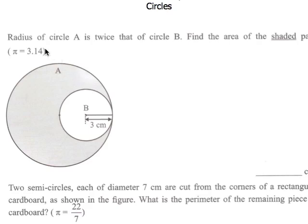Of course we can. And it says that radius of circle A is 2 times or twice that of circle B. So we immediately know that the radius of circle A is 3 times 2, which is 6 cm. And if we know the radius of the big circle, can we find the area of the big circle? Of course we can.